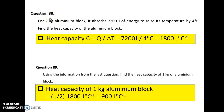Question 88. This is a 2 kilogram aluminum block. It absorbs 7200 J of energy so that its temperature increases by 4 degrees Celsius. You may apply the formula to find the heat capacity, which is the energy supplied divided by the temperature rise. Question 89. You are asked to find the heat capacity of a 1 kilogram aluminum block. So you may just divide the answer of the last question by 2 to get the heat capacity of a 1 kilogram aluminum block.